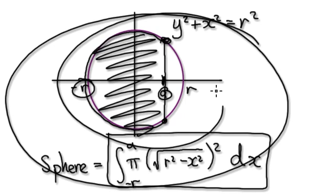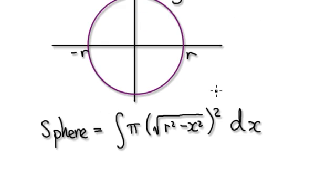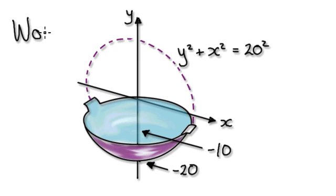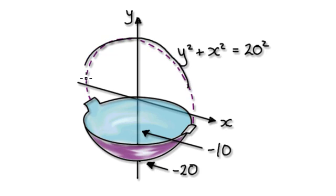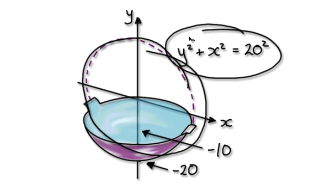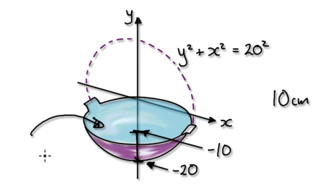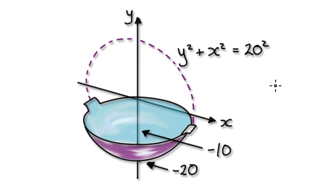Bear this in mind and use it to help you answer the next question. So the next question is: I'm trying to design a wok — a wok is something that Chinese people use to stir fry their food. This here is your circle. I'm trying to design a wok, but the height of the wok must be 10 centimetres. How much water can this wok contain? Find the volume of this wok. Press pause and have a go.